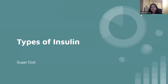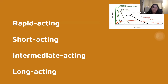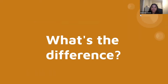Hi everyone, thank you for tuning in to today's Sugar Club YouTube video. We're now going to be briefly discussing the four different types of insulin you may encounter. The four types we're going over today include rapid acting, short acting, intermediate acting, and long acting.